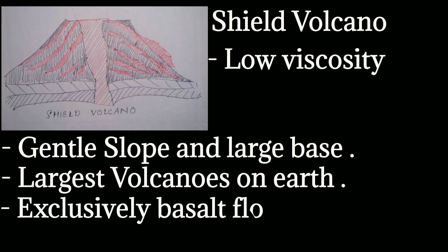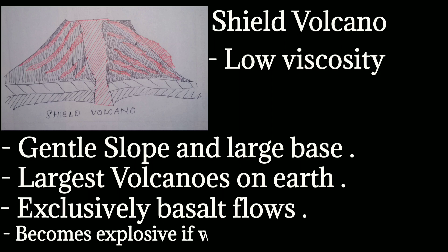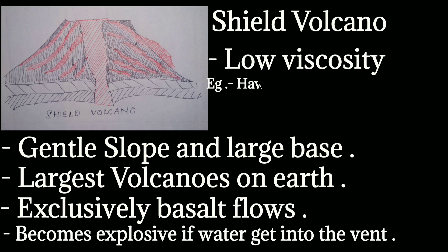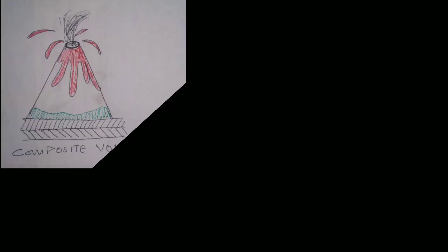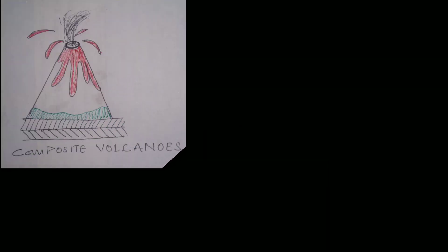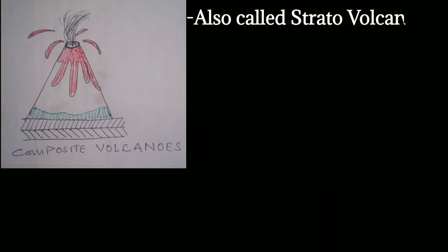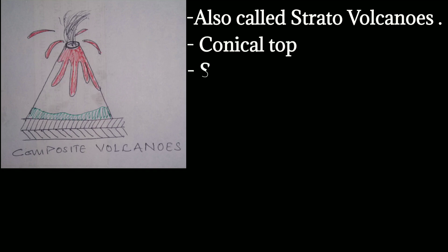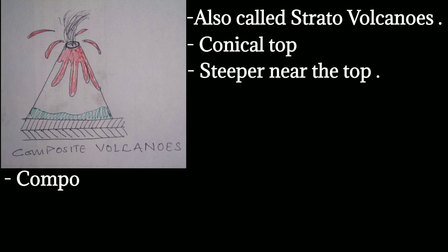Shield volcanoes can become explosive if water gets into the vent. Examples are the Hawaiian volcanoes and Iceland. The second type of volcanoes are composite volcanoes, also called strato volcanoes. They have a conical top and are composed of lava flows, pyroclastic deposits, and mud flow deposits.